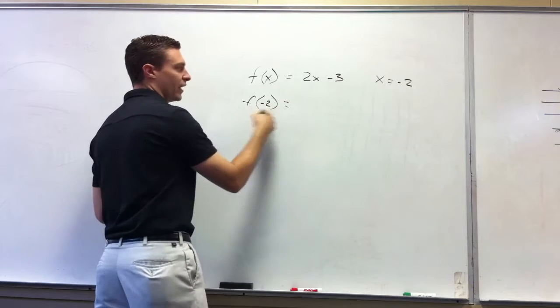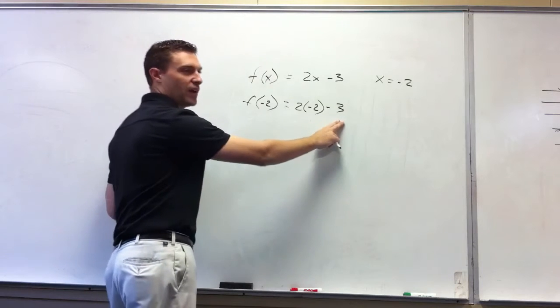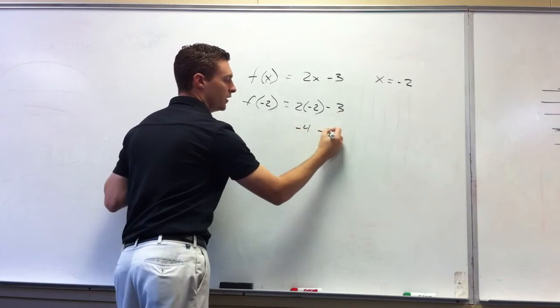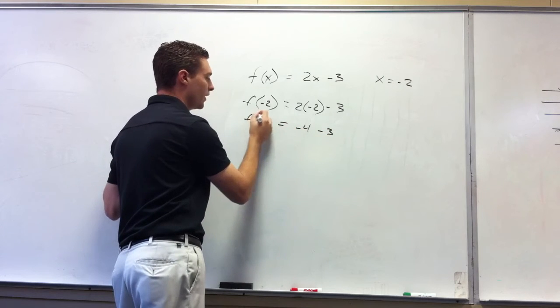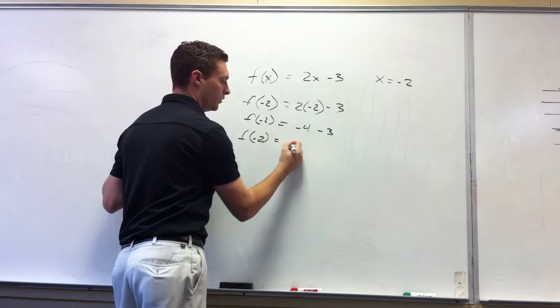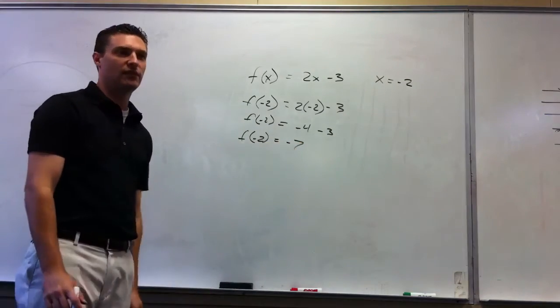You'll say f of negative 2 equals 2 times negative 2 minus 3. Simplify this. 2 times negative 2 is negative 4. Negative 4 minus 3 is negative 7. So you would say f of negative 2 equals negative 7. You just pull the f of negative 2 all the way down and say that equals negative 7.